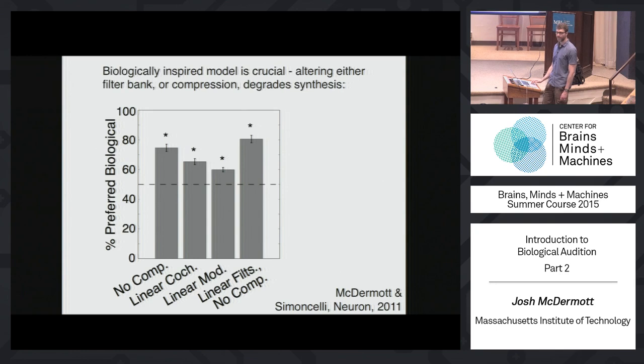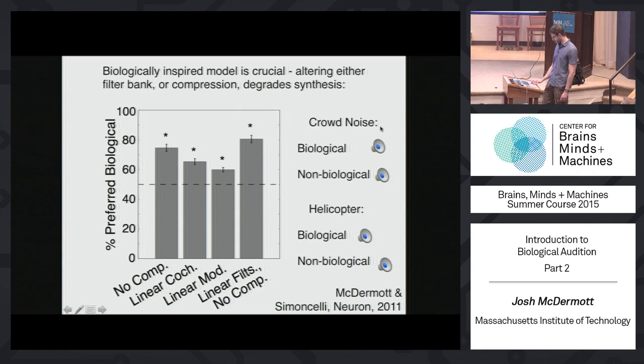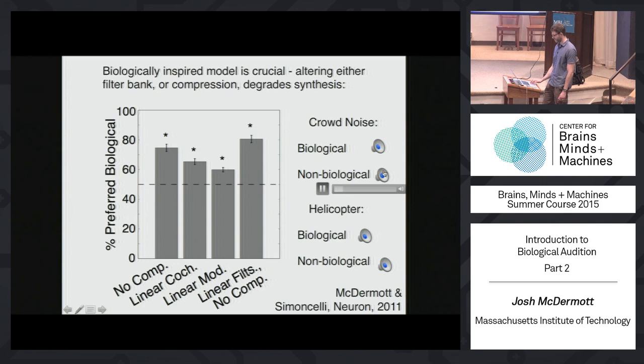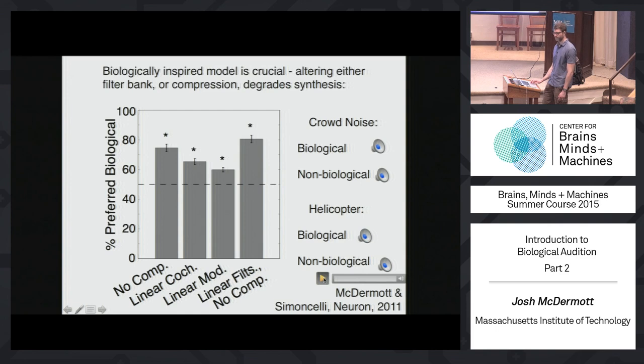Here's crowd noise synthesized from the biologically-plausible auditory model, and here's the result from the altered model — where everything is different. The ability to hear it, it just kind of sounds weird and garbled in some way. Here's a helicopter synthesized from the biologically-plausible model, and here's from the other one — it sort of doesn't sound like the modulations are quite as precise.